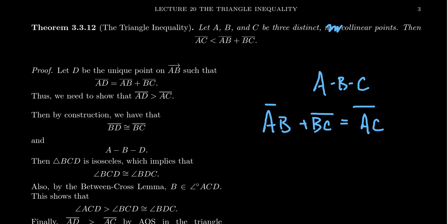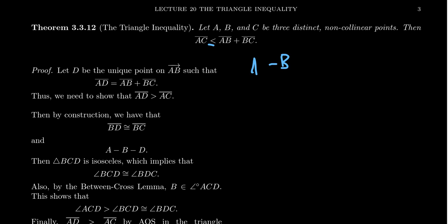Therefore the triangle inequality is sometimes written as: if A, B, and C are three distinct points with no assumptions about collinearity, then segment AC is less than or equal to AB plus BC, where equality only happens when B is between A and C. If the points are non-collinear it will be a strict inequality. We will prove the strict inequality case, which generalizes quickly to the other case.